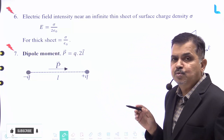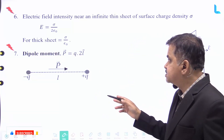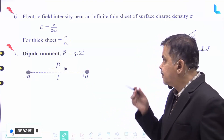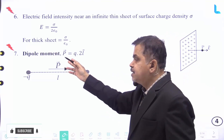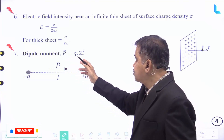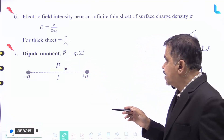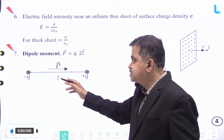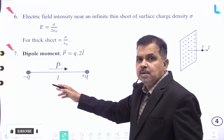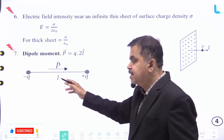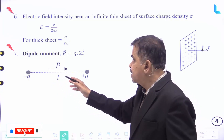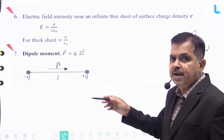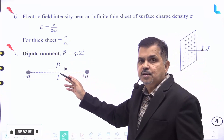Understanding the electric dipole moment: the dipole moment P is equal to Q into 2l. Here, minus Q and plus Q form a dipole separated by a distance l — two equal charges of opposite nature separated by distance l. The moment existing between these two charges is given by P equal to Q into 2l.